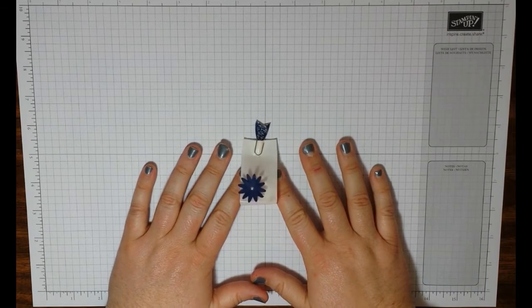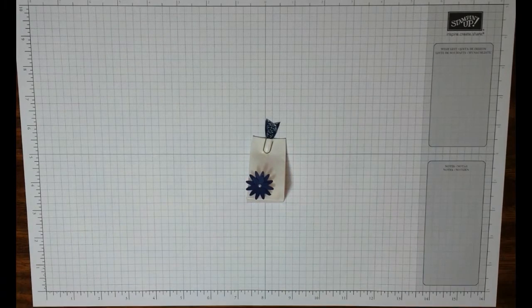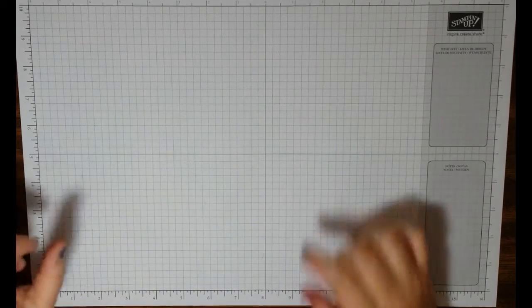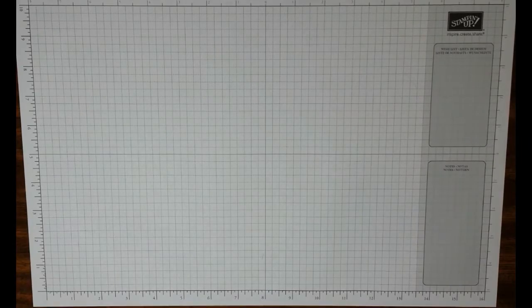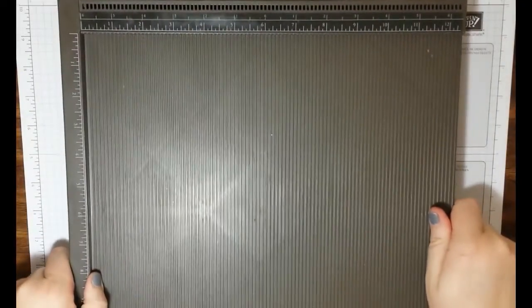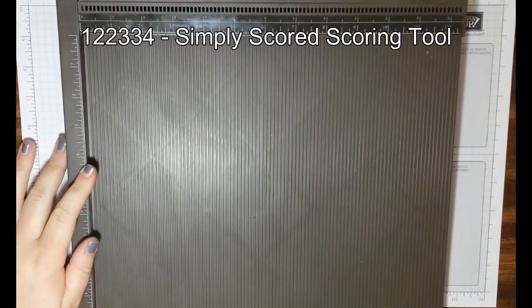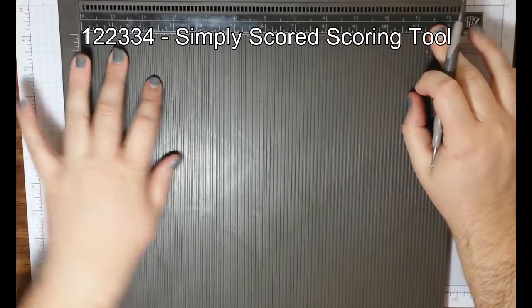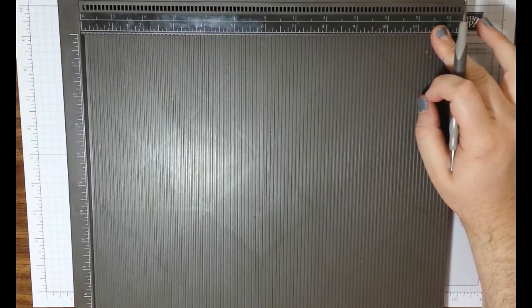I decided to pull out a few things that I haven't used in a really long time. So let's go ahead and get started. Grab your Simply Scored scoring tool. Yes, the bottom part of this is off the screen. Don't worry about that. You're not going to need to score down that far.